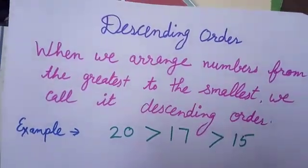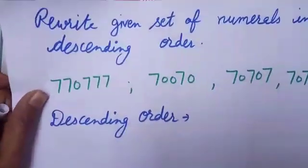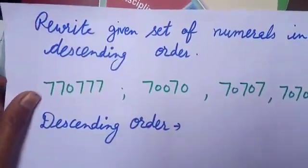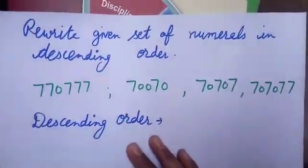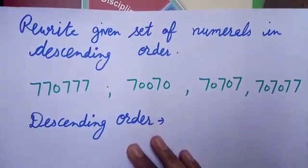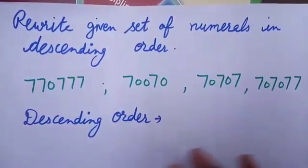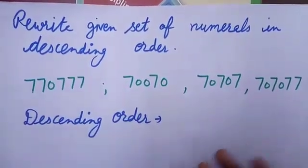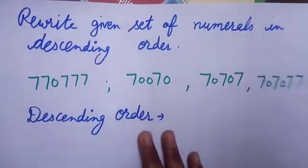Now let's take one example. We write the given set of numerals in descending order. It means I want to arrange them from the greatest to the smallest. Firstly, I will count the number of digits.